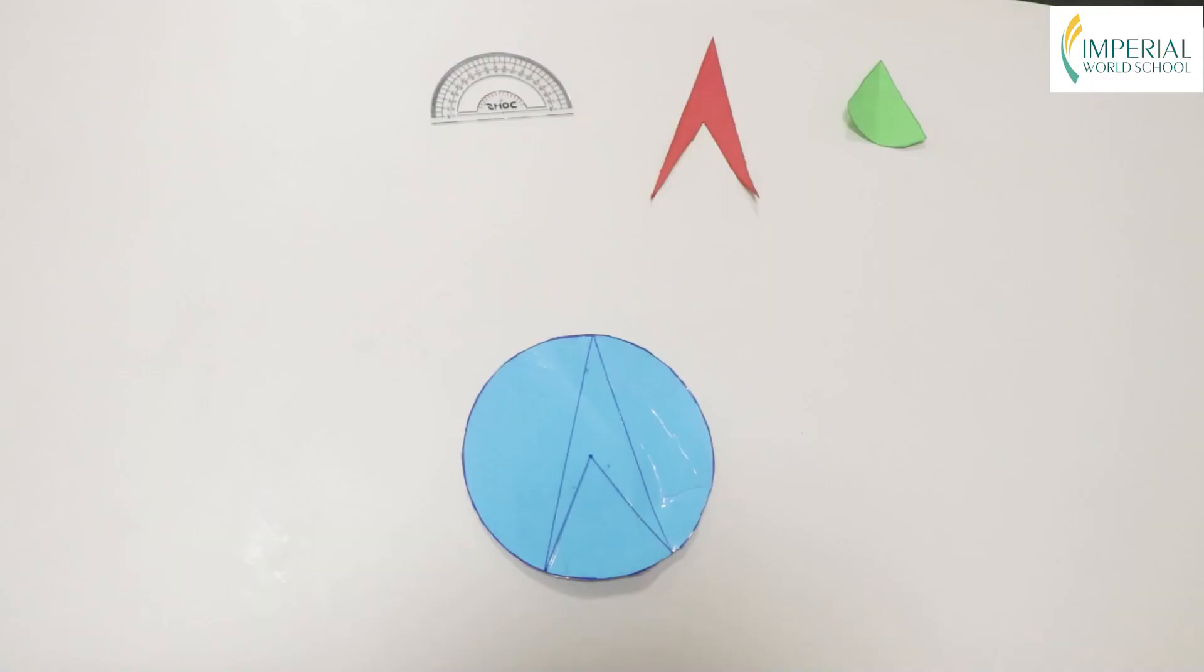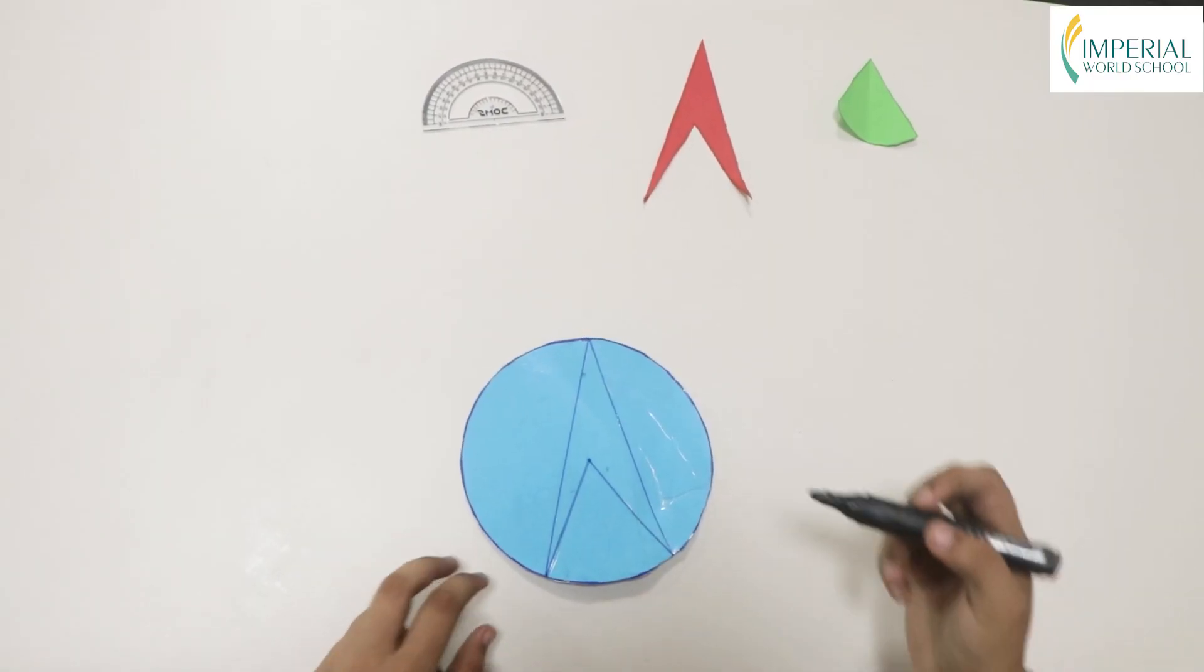An inscribed angle is a type of angle formed on the circumference of a circle. The circumference is the boundary line of the circle. As you can see in this circle, this angle...